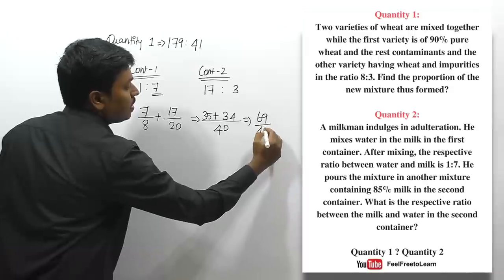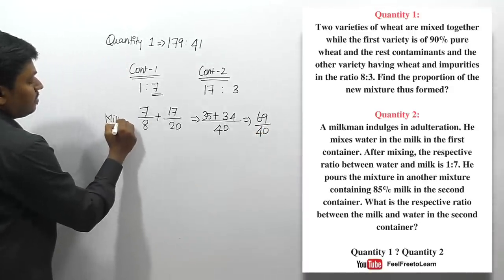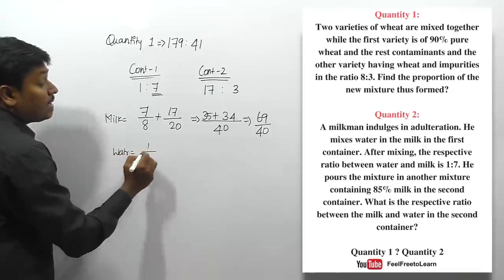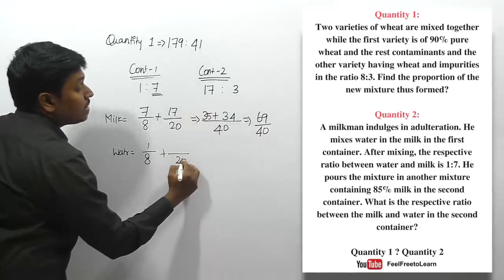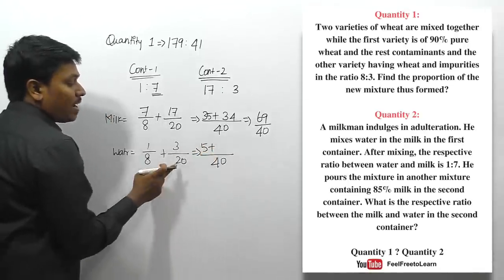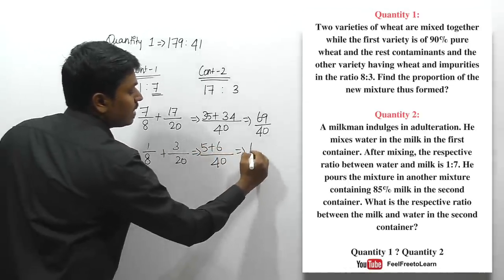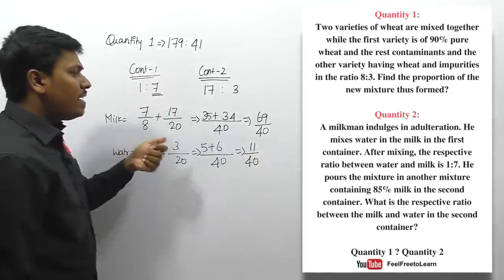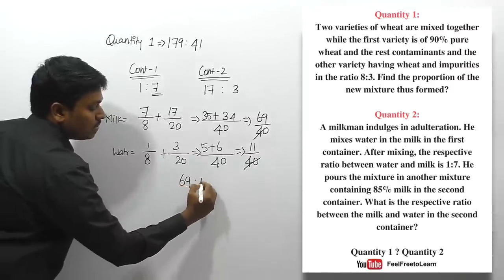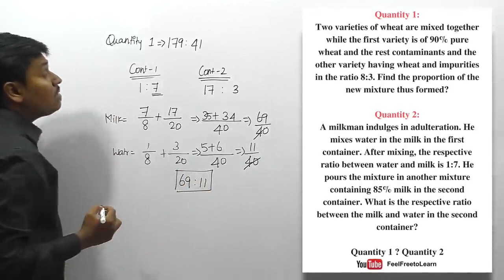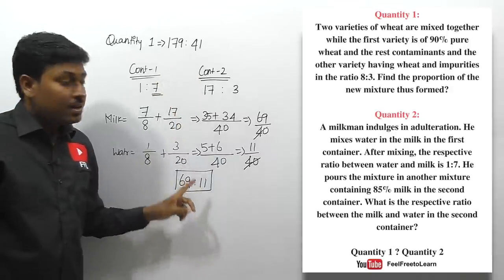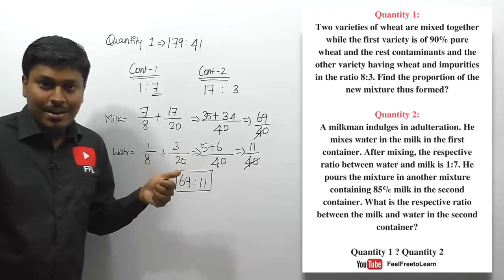For water: 1/8 gives 5/40 and 3/20 gives 6/40, total water = 11/40. Cancelling 40, the milk-to-water ratio is 69:11. Quantity one gave 179:41 and quantity two gives 69:11. Comparing as fractions 179/41 ≈ 4 times and 69/11 ≈ 6 times, so quantity two is greater than quantity one.